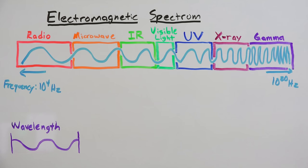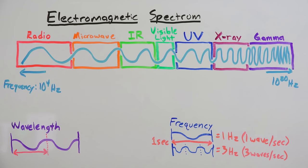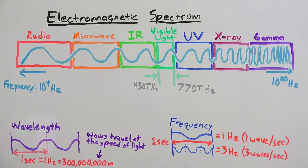Waves are defined by their wavelength, which is the distance between wave crests, and their frequency, the number of waves that travel past a given point per second. Our eyes see waves with a frequency of about 430 to 770 terahertz.